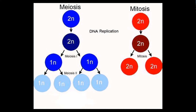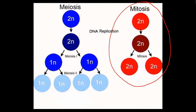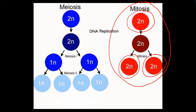Why does this happen? Let's think back to our life cycle of humans. We know about mitosis because mitosis is making identical cells — this happens in all our body or somatic cells which are diploid. So a diploid cell divides and forms 2 diploid cells. That's mitosis.